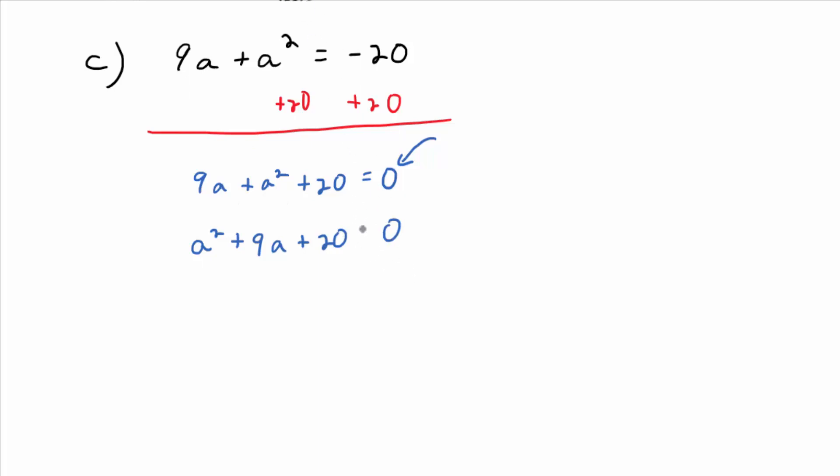Let's practice our guidelines on the left side. You know that we want to factor this. You see three terms. Is there a common factor? Always look for that first. No. Then you look at the number of terms — you see three terms. So what do you do? Reverse FOIL, right?